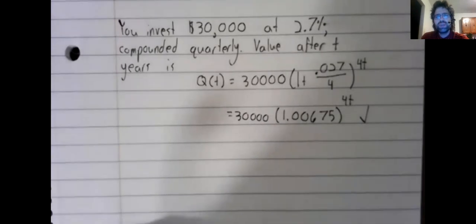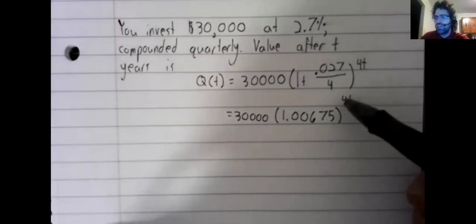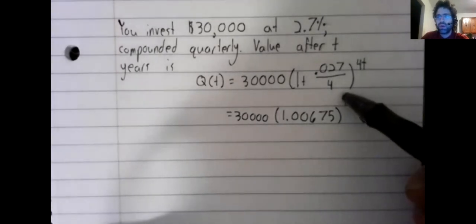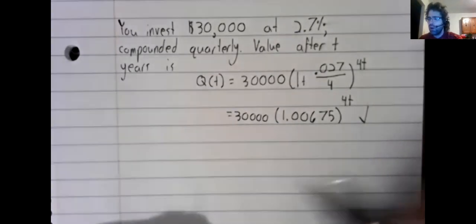When we defined exponential functions, there weren't numbers up here. Isn't this four a problem?